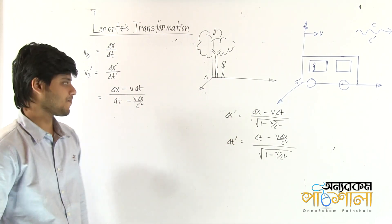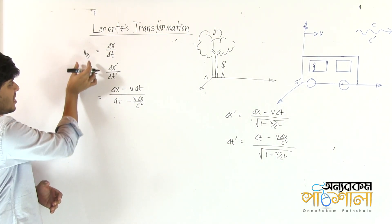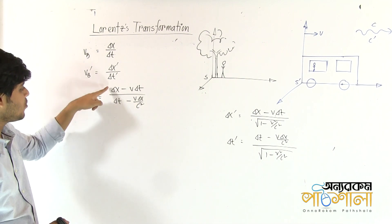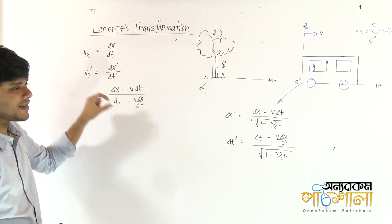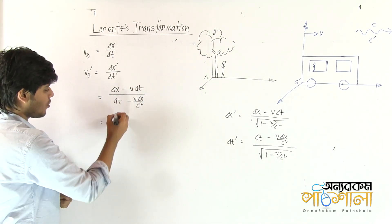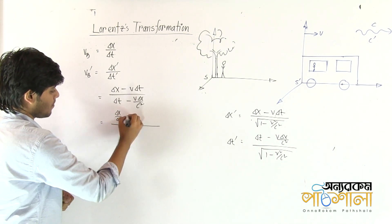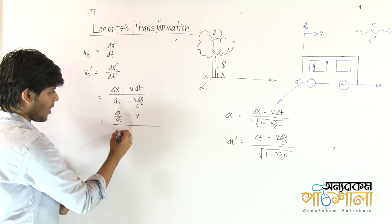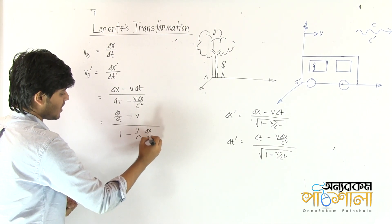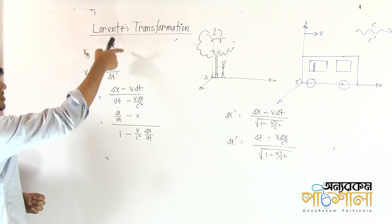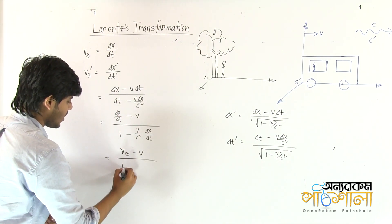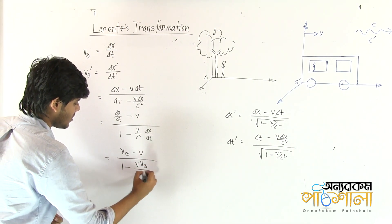We have delta t minus v delta t. We have delta x minus v by c square by delta t, where delta x by delta t is VB. Where is delta x minus delta t? It is important to be delta t. So we can do delta x minus delta t. We can do delta x minus v times delta t divided by delta t.